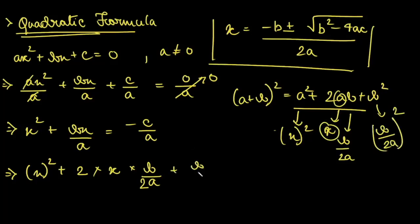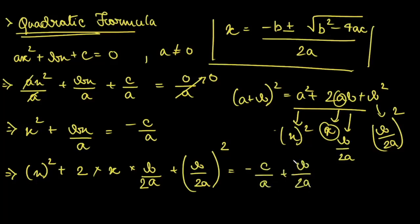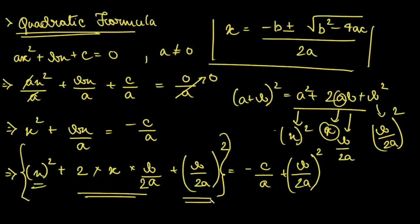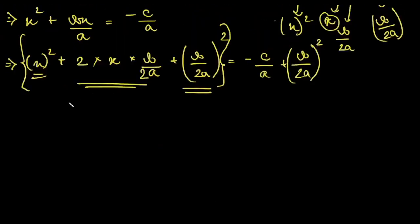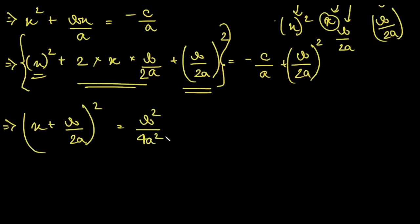We write plus b by 2a whole square on the LHS. Since we are adding an extra term, we will also write plus b by 2a whole square on the RHS. This whole thing is clearly in the form of a squared plus 2ab plus b squared, so we can write it as a plus b whole square. This gives us x plus b by 2a whole squared is equal to b squared divided by 4a squared minus c by a.